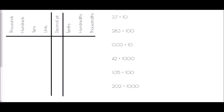Now we move on to dividing, which is the opposite of multiplication. Where we moved left when multiplying, when we divide we move to the right. For 3.7 divided by 10 — a single zero, so one space to the right — the 3 moves from units to tenths, and the 7 moves from tenths to hundredths. We keep the decimal point and add a placeholder zero in the units: 0.37.